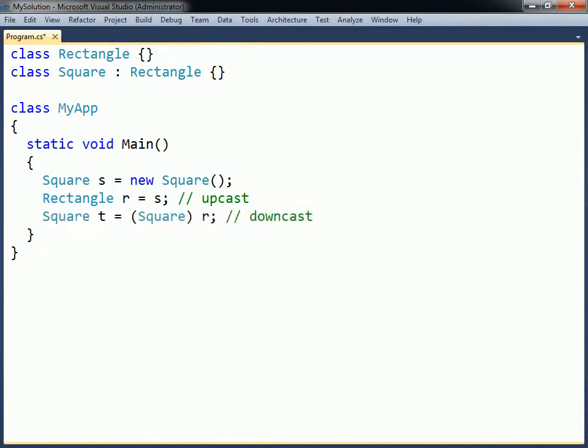When the object is downcast back into a square, everything specific to the Square class will still be preserved. This is because the Rectangle only contained the square, it did not change the square object in any way.